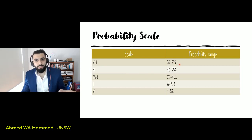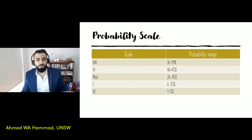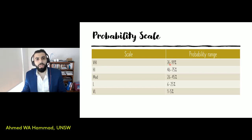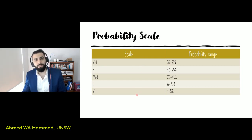Here's an example of the five-step probability scale: very high, high, moderate, low, very low. If the chance of an event occurring is between 76 and 99 percent, it's labeled very high. If it's between 46 and 75 percent, it's high, and so on. These values change depending on the organization. In my scale I have five steps, which is the most common number, but you can increase or decrease that to suit the type of projects your organization undertakes.